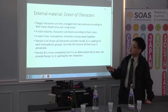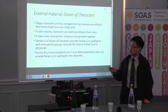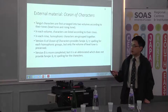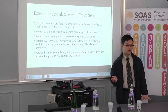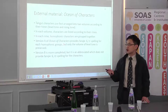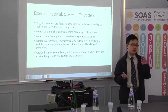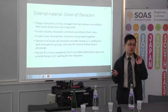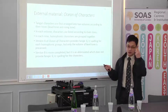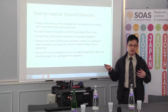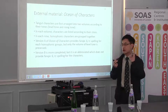In this book, Tangut characters are first arranged into two volumes according to their tones, which are the level tones and the rising tone. In each volume, characters are listed according to their rhymes, and in each rhyme, homophonic characters are grouped together. There are two major versions. Version A of the Ocean of Characters provides very important information on the fancy spelling, which means in each homophonic group, the book provides two Tangut characters to spell the initial and the rhyme of the target Tangut character, following the fashion of the Chinese fanqie. We can use it to know the interconnection between different rhymes and initials.